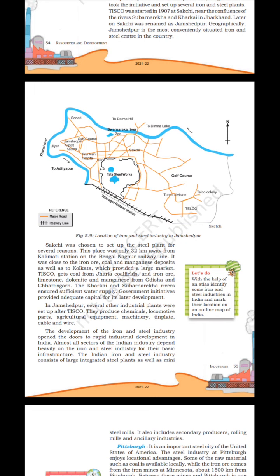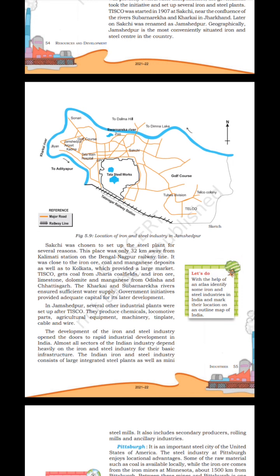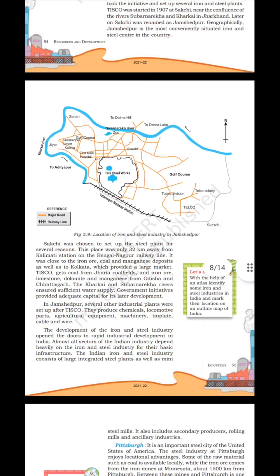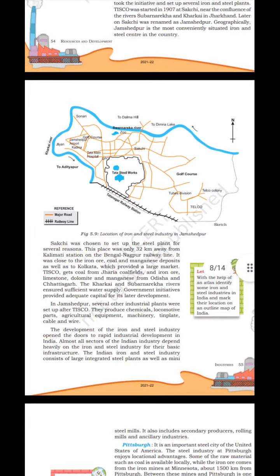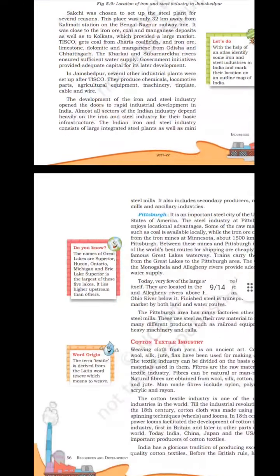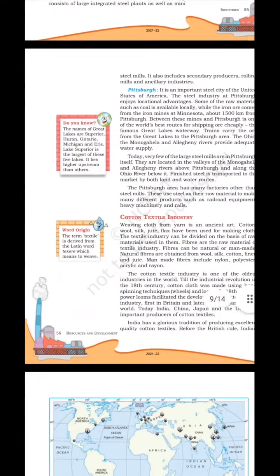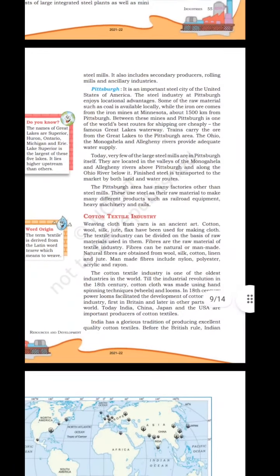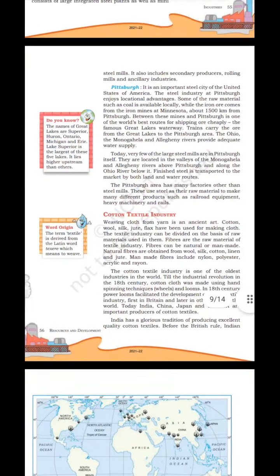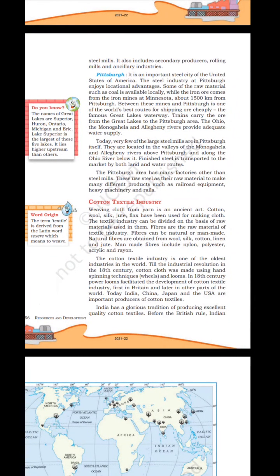In Jamshedpur, several other industrial plants were set up after TISCO, producing chemicals, locomotive parts, agricultural equipment, machinery, tin plate, cable and wire. The development of the iron and steel industry opened the doors to rapid industrial development in India — almost all sectors of the Indian industry depended heavily on iron and steel for their basic infrastructure. The Indian iron and steel industry consists of large integrated steel plants, steel mills, secondary producers, rolling mills and ancillary industries.